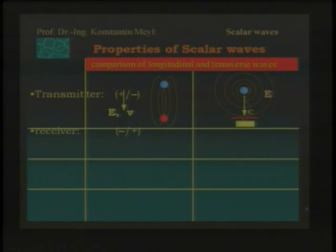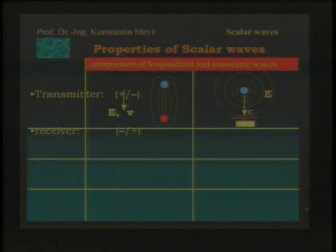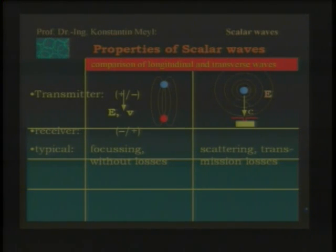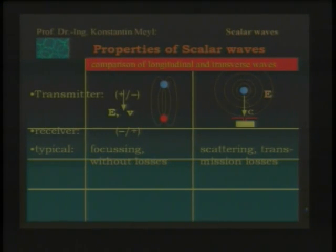Here on the right side, the lines are not very strong. The lines of the electrical field pointer are just round — they move around the transmitter. So this is only part of the power that the receiver is receiving. The fields are scattering; we have transmission losses. But on the left side with the scalar wave, the field lines are focusing, bundling up at the receiver, so they have no losses.